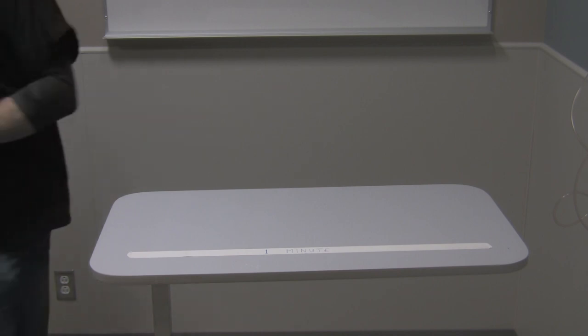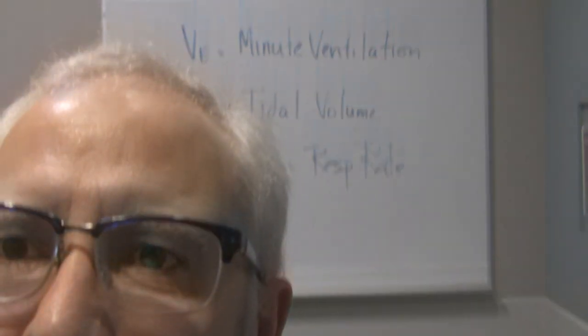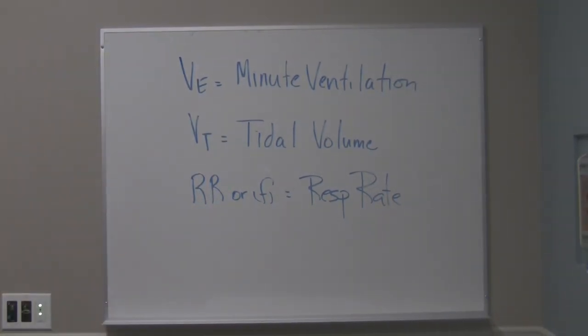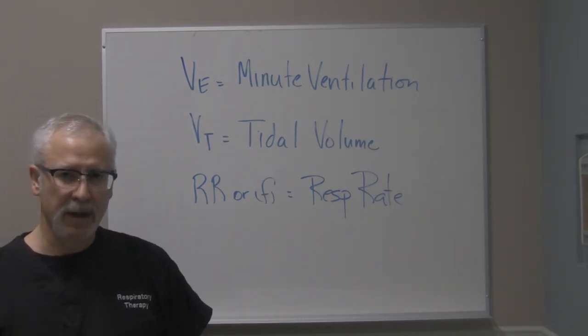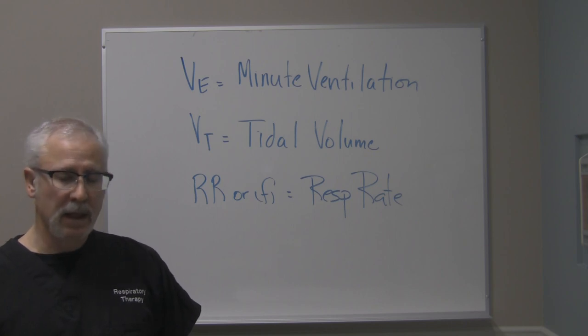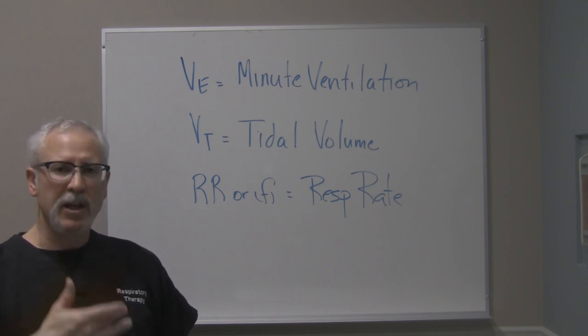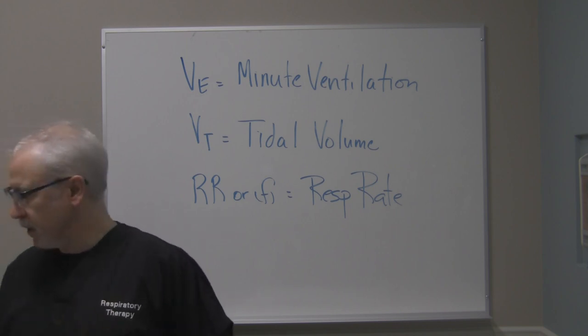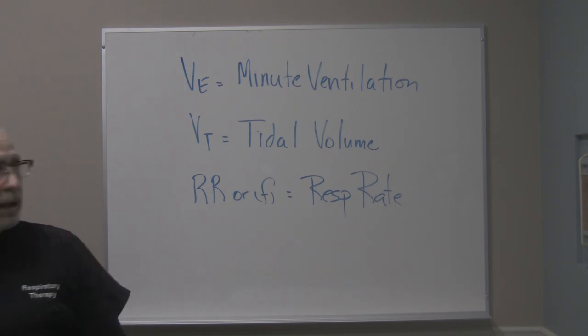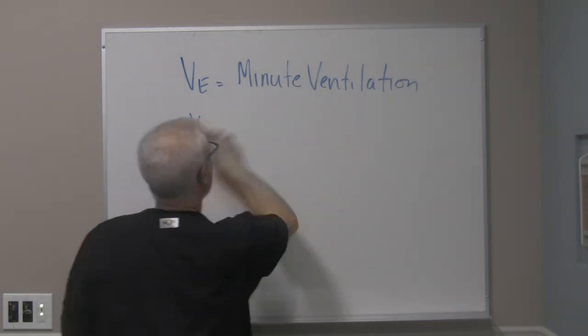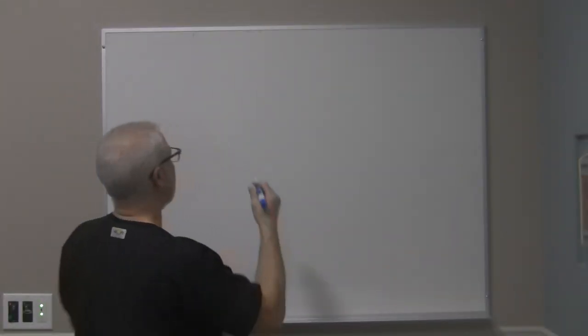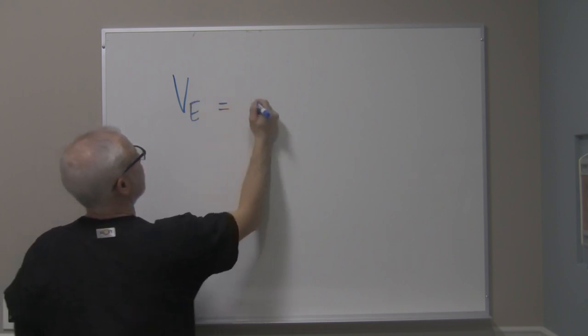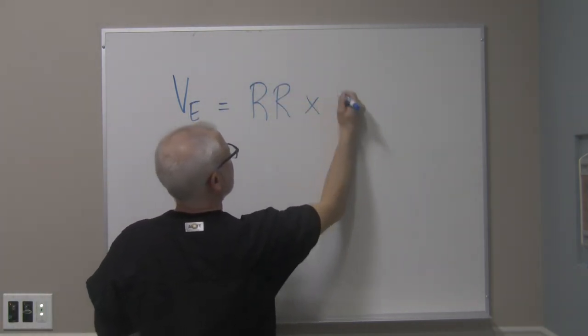So all the breaths for that minute and the volume each breath contained added together. So the entire volume in one minute. So if you're ventilating a patient, or if you're assessing your patient spontaneously breathing, or if you are working on a ventilator and you're seeing what the patient's respiratory rate is, there's a relationship between the respiratory rate, the tidal volume, and the minute ventilation. And it looks something like this if you want to place it into a formula.